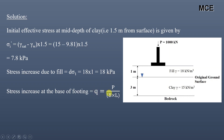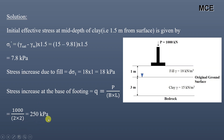The stress increase at the base of the footing is given as q = P / (B × L), where P is the load acting on the footing and B and L are the width and length of the footing. Putting in values: 1000 / (2 × 2) = 250 kilopascal. This is the stress increase at the base of the footing.